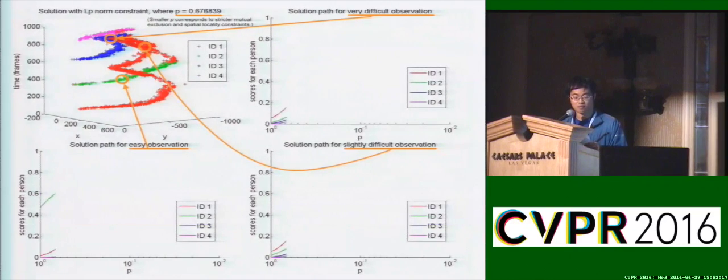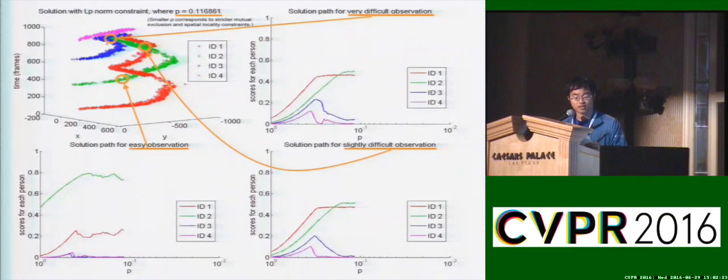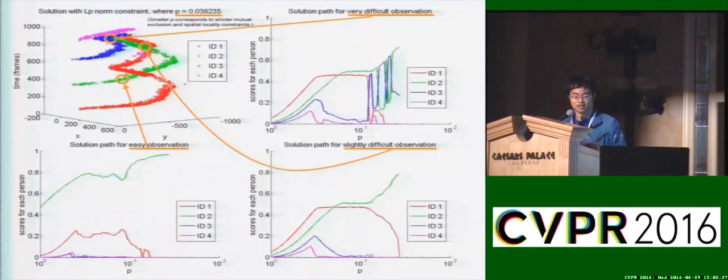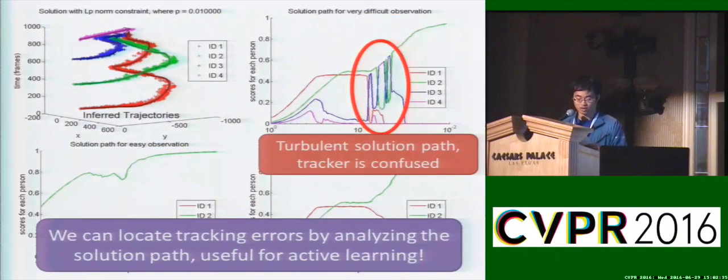As the P in the P norm constraint decreases, the trajectories gradually finalize. Notice that the solution path in the upper right is very turbulent. This shows that the tracker is confused to which label this detection should be assigned. This can be used to identify potential tracking errors, which we have shown to be very useful in the active learning scenario.